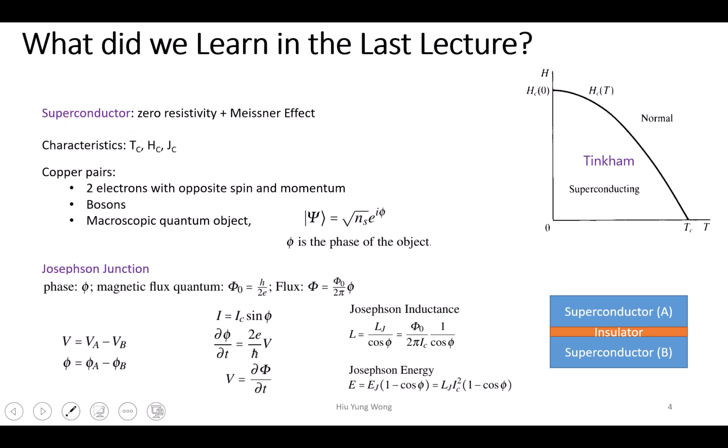We talked about the superconductor, which has zero resistivity and the Meissner effect when you go under the critical temperature. It has three characteristics: critical temperature, critical magnetic field, and critical current density, below which you can still be a superconductor, above which you become a normal conductor.